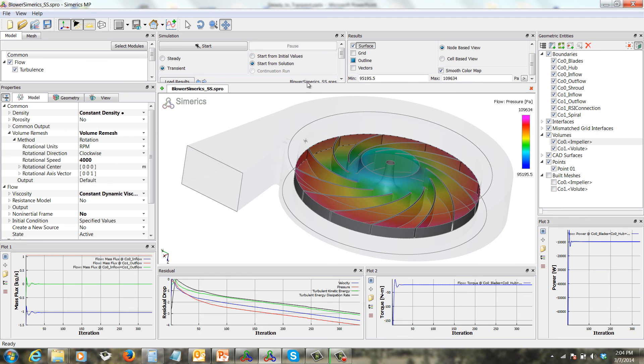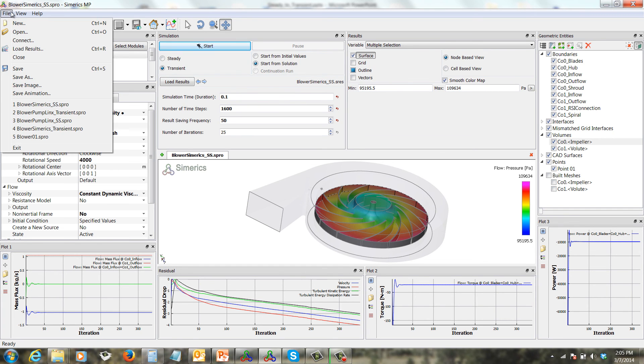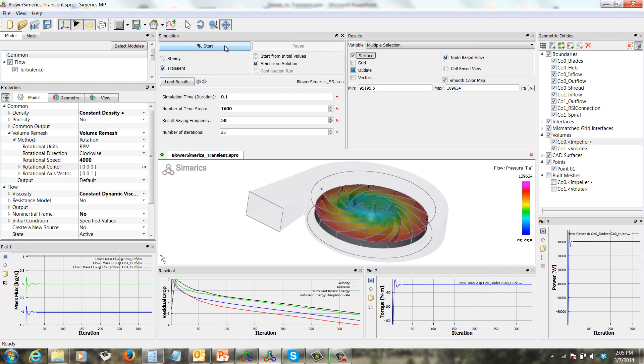So we'll go to the simulation panel, and we see that all the parameters in here are correct. We're a transient run, and we're starting from the steady-state solution. Let's save this under a different name, and let's launch the solver.